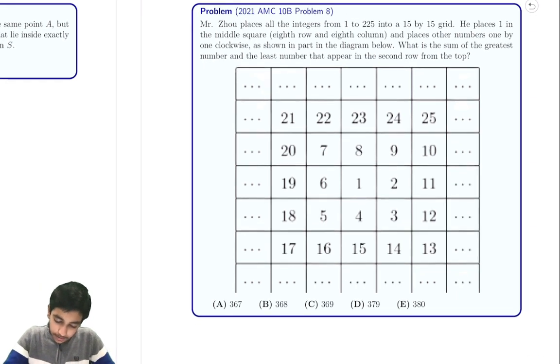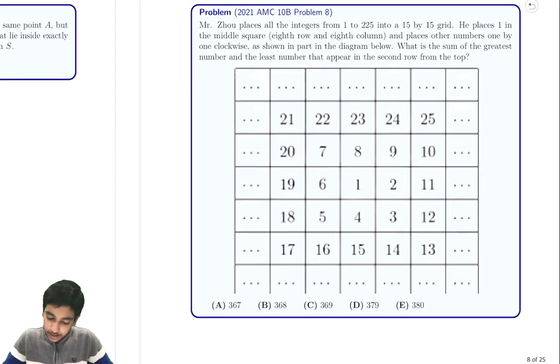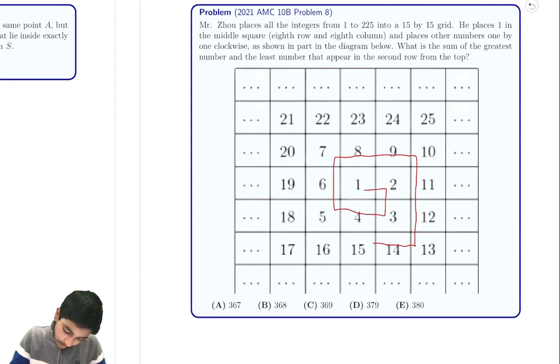Mr. Zhao is placing some integers in this 15 by 15 grid, places 1 in the middle square, and is placing other numbers in this clockwise snake kind of pattern, like you see here. They're placing in this kind of spiral pattern, like this, and so on.